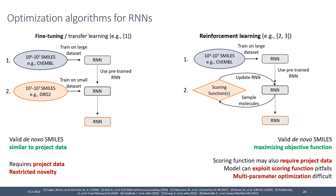The other framework is reinforcement learning or other optimization algorithms. You pre-train a network, sample molecules, evaluate them with scoring functions that define your objective, and update the network based on the fitness of those molecules. If you use ML models for scoring functions — simple property predictions like binding affinity — you get exploitation of that ML model by the generative model. In practice you almost always need multi-parameter optimization to offset this exploitation.